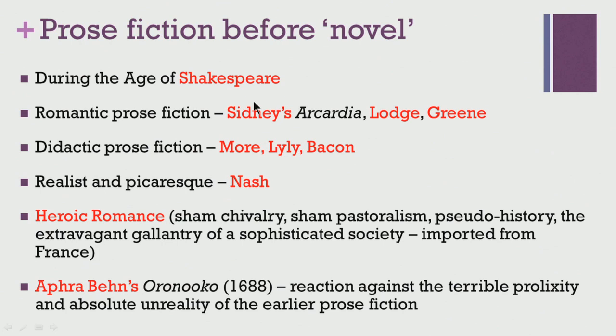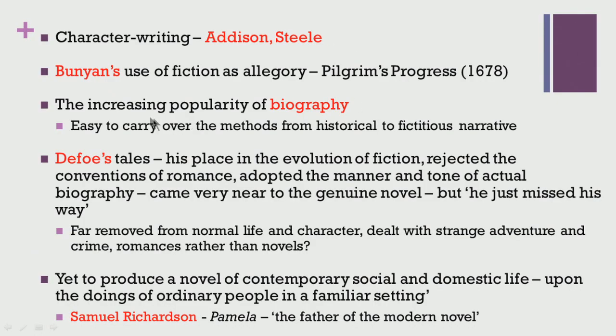It is also worthwhile to note that Aphra Behn's Oroonoko, published in 1688, was a reaction against the prolixity and absolute unreality of earlier prose fiction. The earlier forms of prose fiction were mostly unrealistic and not related to real life. From the end of the 17th century and early 18th century onwards, a form of writing known as character writing was promoted by Addison and Steele through their periodical essays. John Bunyan's use of fiction as allegory in Pilgrim's Progress was also seen as a significant contribution to the emergence of the novel.